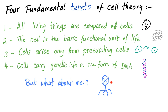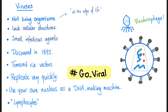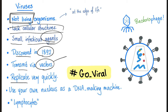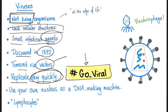Viruses are weird because they are not cells. Viruses are not living organisms — they are kind of in between living and non-living, at 'the edge of life.' They cannot replicate independently, cannot make their own energy, let alone synthesize their own proteins, and they lack cellular structures. They are small infectious agents discovered in 1892. They are transmitted via vectors and replicate very quickly — that's why we say 'go viral.' No one says 'go bacterial.' These viruses need to infect a host cell and then replicate using your cell as a DNA-making machine — DNA or RNA of course.